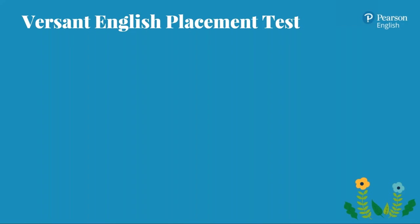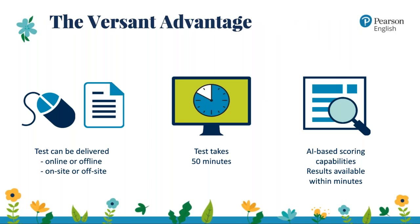We'll focus now on the Versant English Placement Test, or VEPT for short. What do we mean by the Versant Advantage? Tests can be taken almost anywhere — online or offline, on-site or off-site. As long as you've got a computer, a headset and a microphone, you can take the Versant English Placement Test. Learners can potentially take the test within a university, a partner school, or even at home. The test can be done any time of day, any day of the week, whenever you need them to take place.